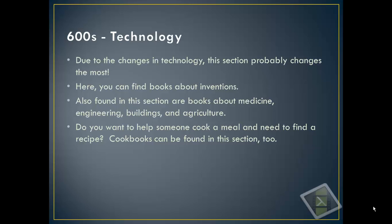The 600s are technology books. Due to the changes in technology, this section probably changes the most. We're supposed to weed, or get rid of, technology books every few years because the technology is no longer around or has been upgraded. You can also find books here about inventions, medicine, engineering, buildings, and agriculture. Maybe you wanted to help someone cook a meal — cookbooks can be found here too. The 600s really has a variety of things to check out.